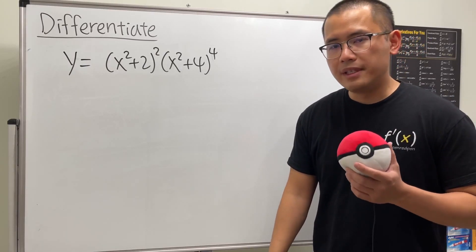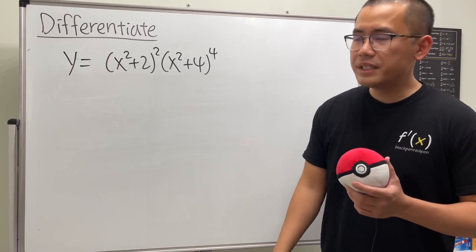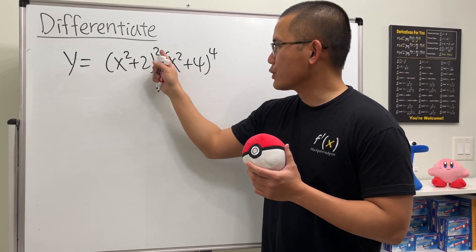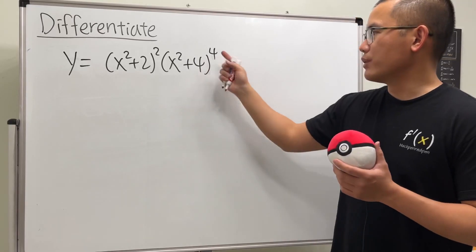Let me show you guys how we can use logarithmic differentiation to find the derivative for y equals the product of (x² + 2)² and (x² + 4)⁴.